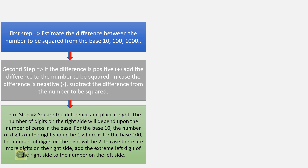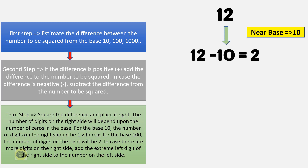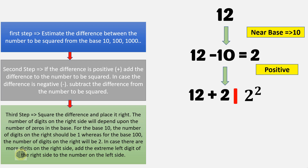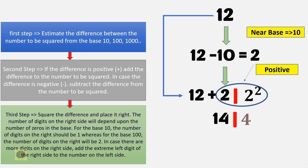Let's understand the technique with some examples. Let's find the square of 12. The base nearer to 12 is 10. The difference is 12 minus 10, which equals 2. Since the difference is positive, add the difference to the number to be squared — this becomes the left part of the solution. In the next step, square the difference and place it on the right. Since the base is 10, there should be 1 digit on the right. Combining the numbers, the square of 12 is 144.